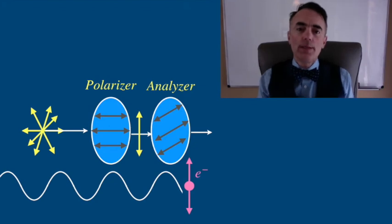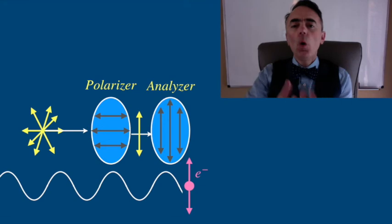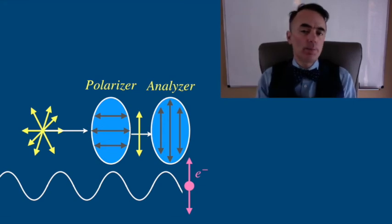If you place them perpendicular to each other, they will block all the incoming light. But if you place them with a certain angle...